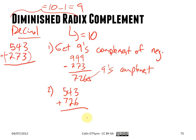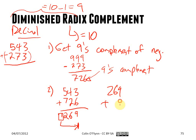We do this as a regular addition: 6 plus 3 is 9, 4 plus 2 is 6, and 5 plus 7 is 12. With the diminished radix complement there's a trick — we have to take this carry of 1 and add it back in to the rightmost digit. So we get 269 plus 1, which equals 270. That's the same result as if we just did the subtraction in our original case. So without using borrows, we can use the diminished radix complement — the 9's complement — to do subtraction.